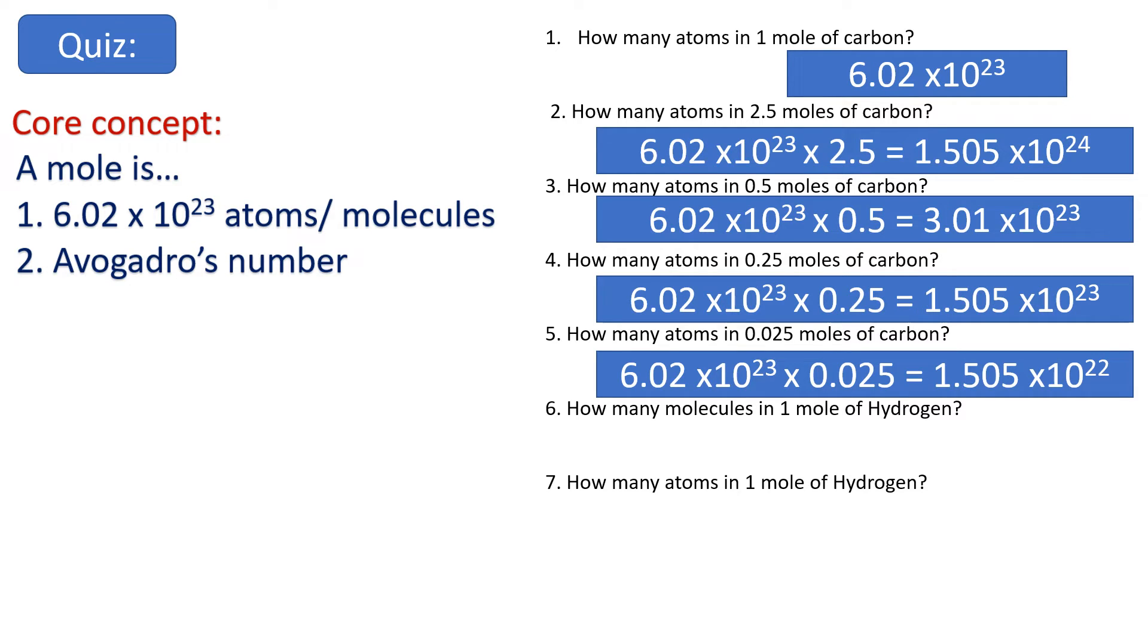Question six, slightly different, look at the wording. How many molecules in one mole of hydrogen? Well again, I'm a bit struggling here, so I'm going to look at those core concepts. A mole is 6.02 times 10 to 23 atoms or molecules. Oh, it's the same number, 6.02 times 10 to the 23.